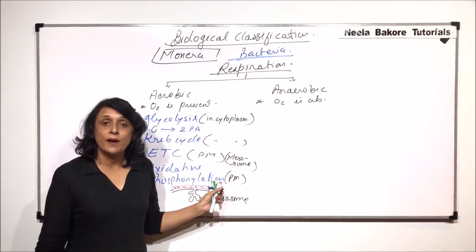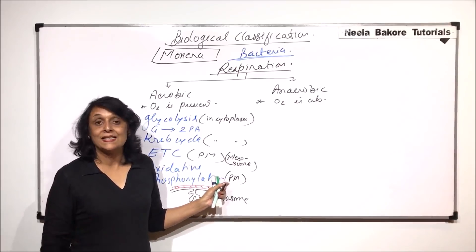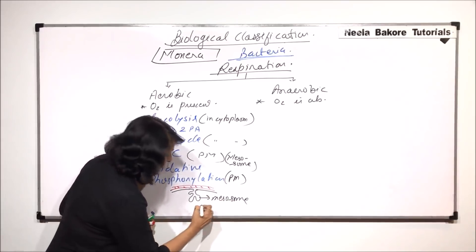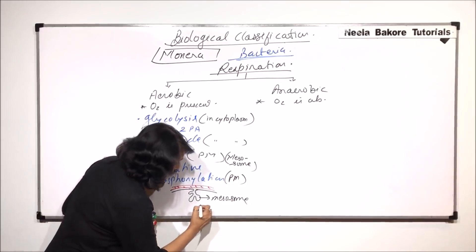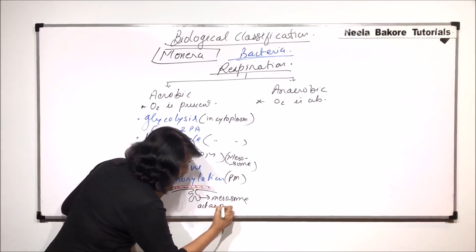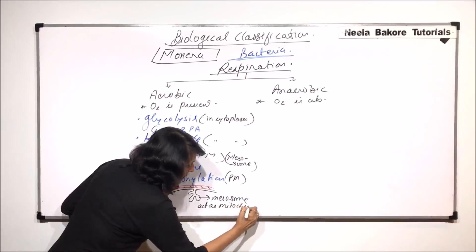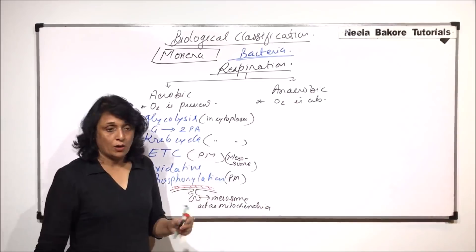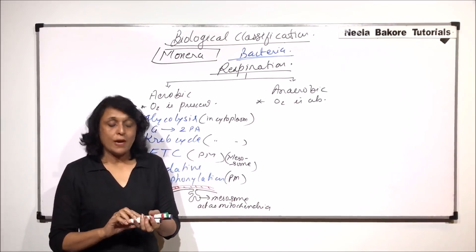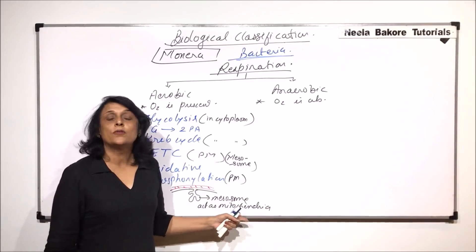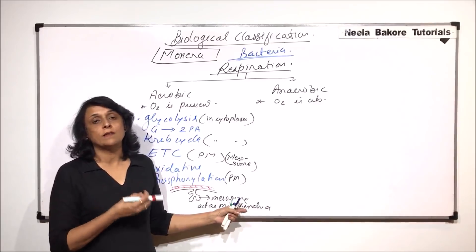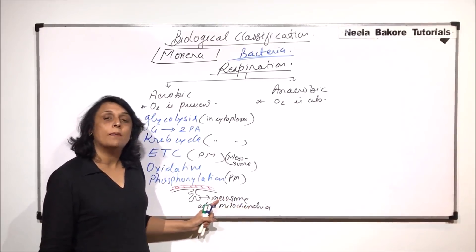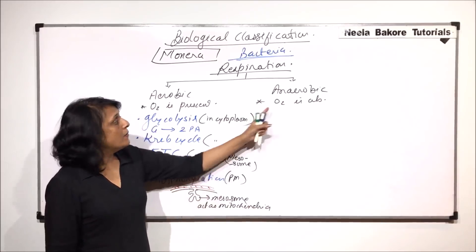The mesosome is the place where electron acceptors are present and where ATP is synthesized. That is why mesosomes are said to act as the mitochondria of the prokaryotic cell. Just as mitochondria are called the powerhouse because they help in ATP production, the same job is done by the mesosome.